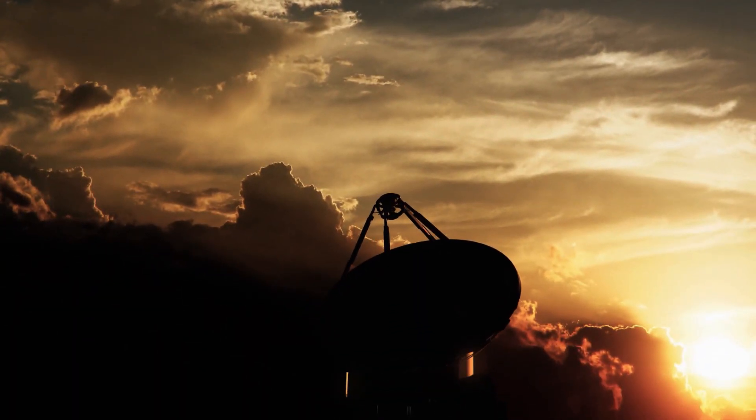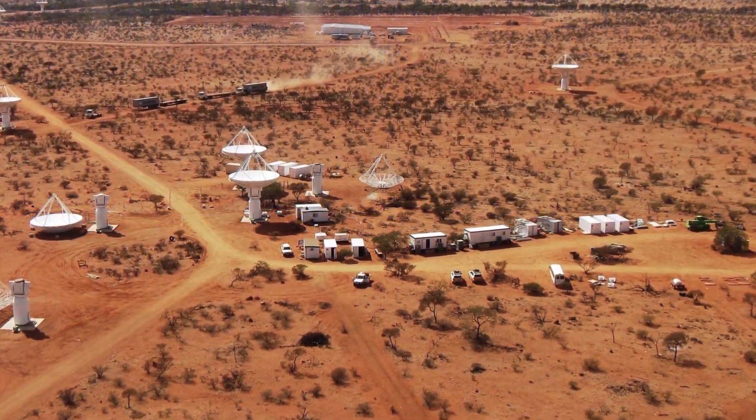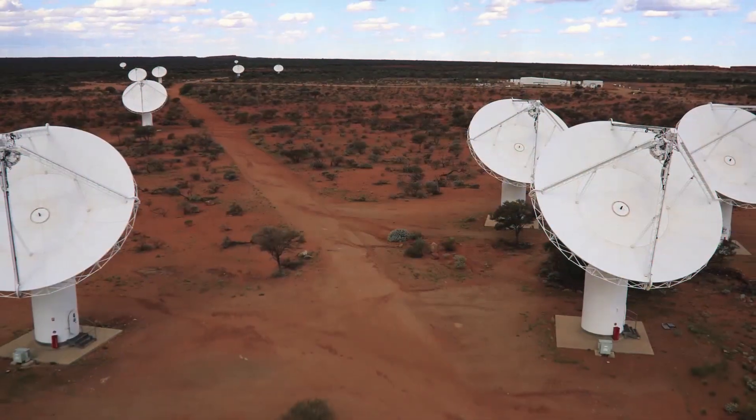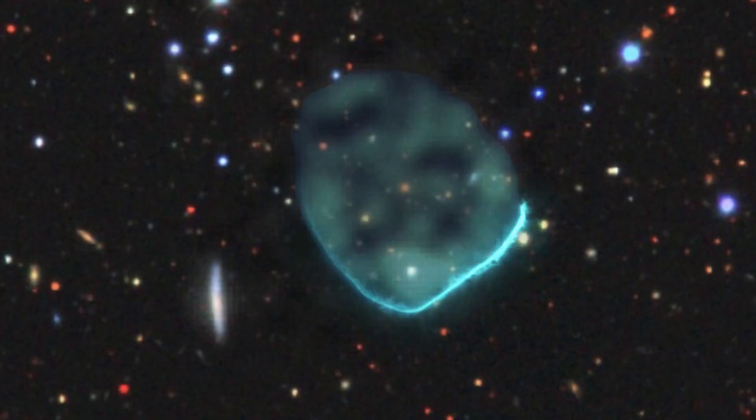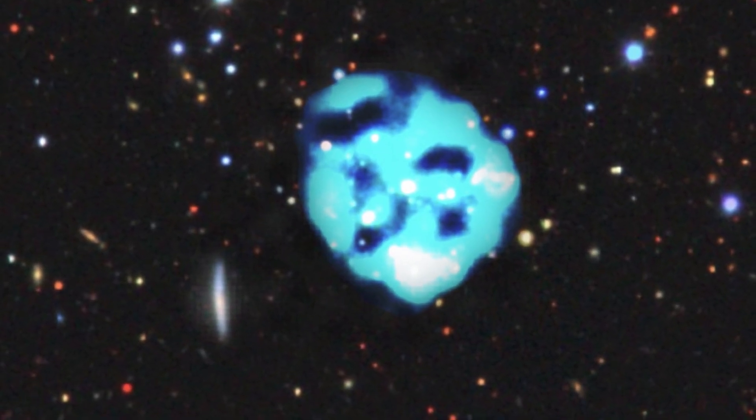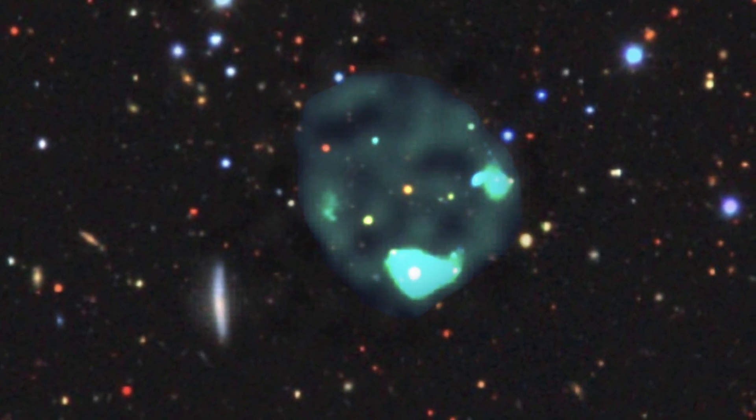This is exactly what happened to radio astronomer Anna Kipinska in September 2019. While browsing through observations made by the EMU project, she noticed a weird shape that looked like a ghostly circle of radio emission hanging out in space like a cosmic smoke ring.